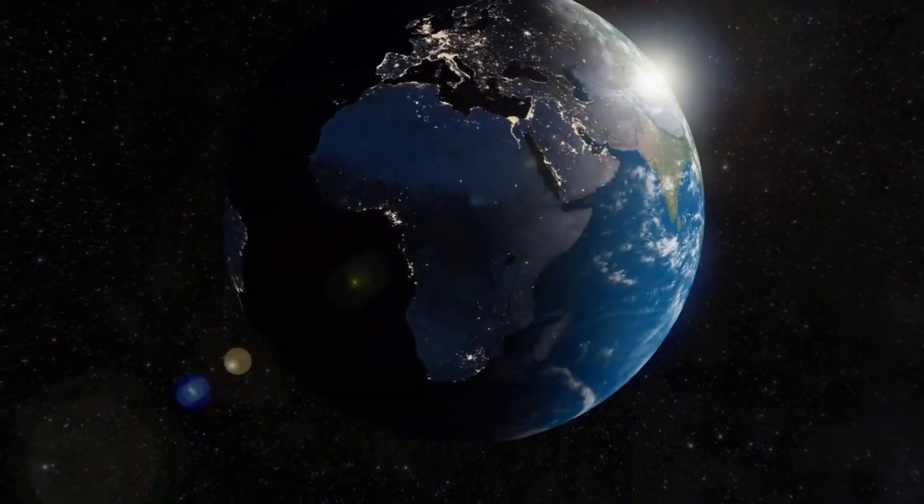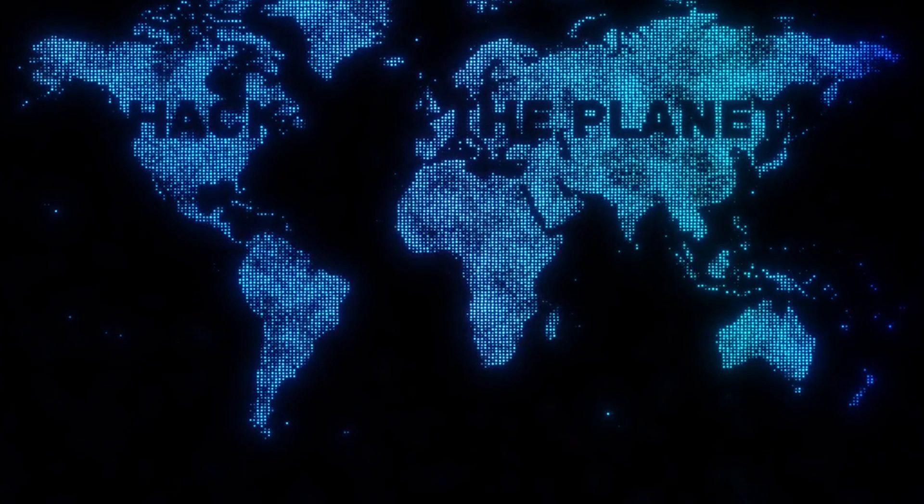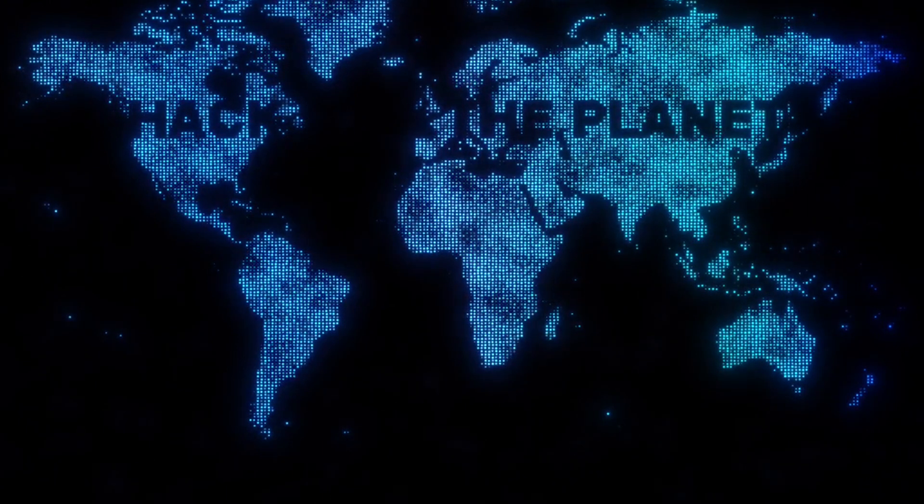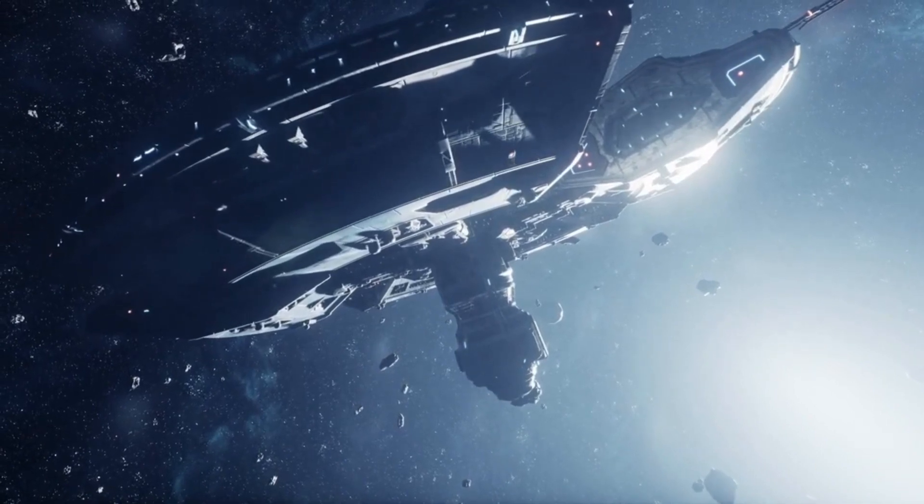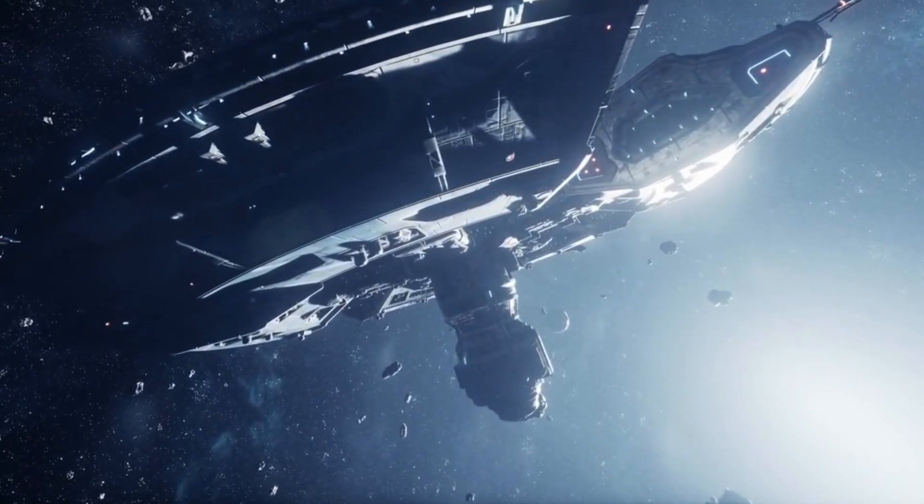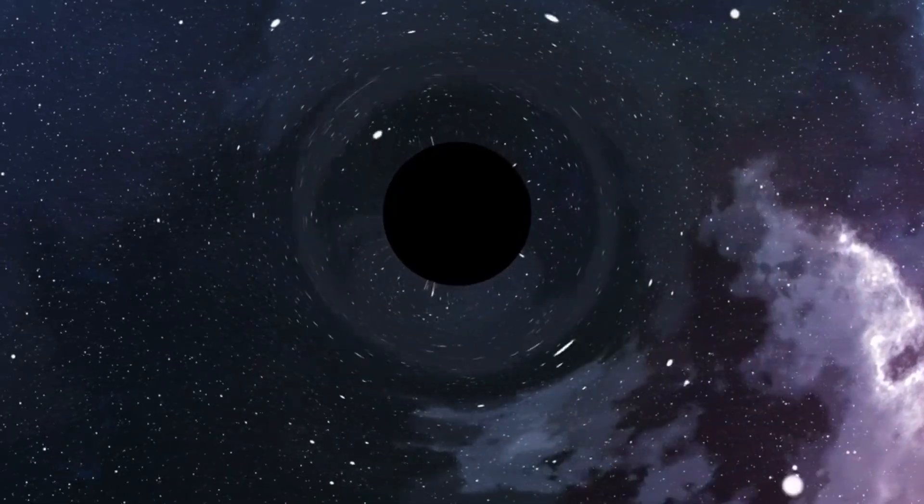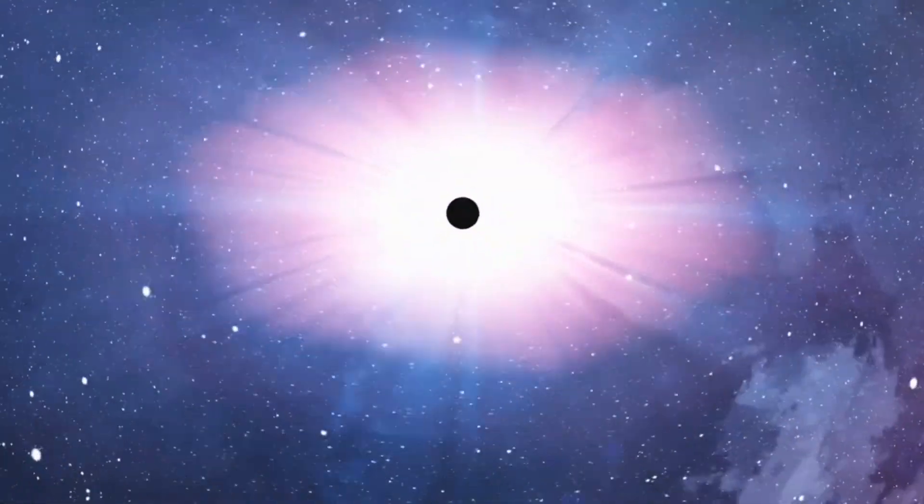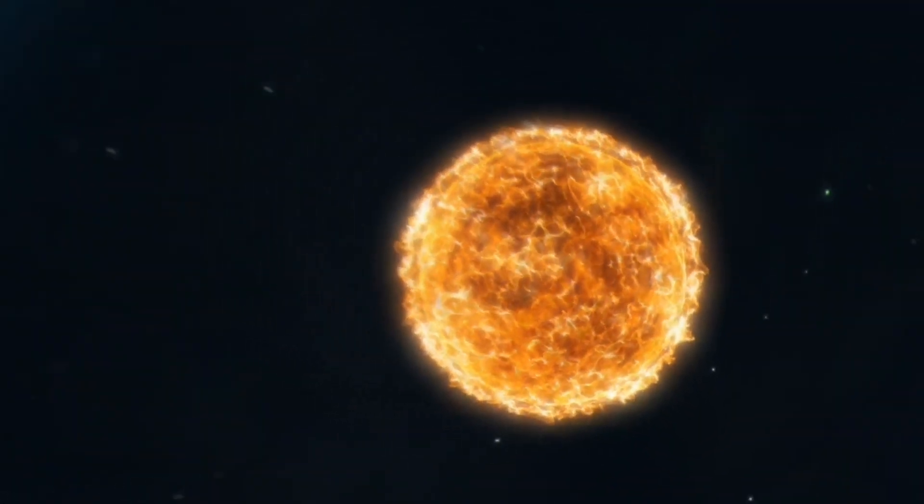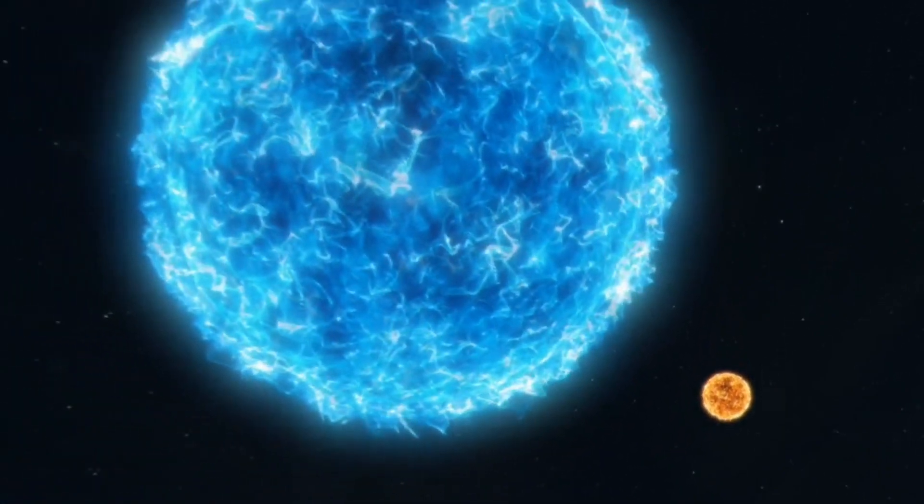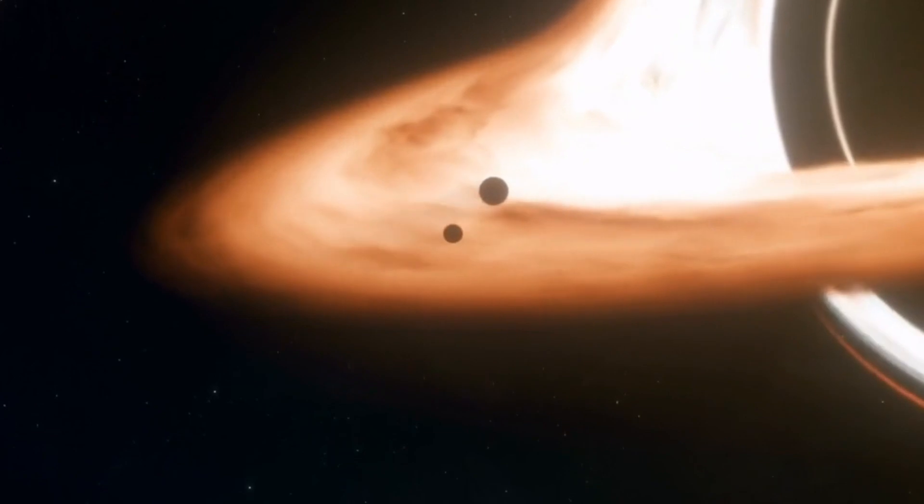So while we don't know for sure where it is, we have decent proof to think it's there. You may think it's impossible to find such a distant object given the data we have, but we have already found a planet based on our predictions once: Neptune. Astronomers of the past believed something was tugging Uranus, but they couldn't find any reasonable explanation. Later, one scientist using classical celestial mechanics made a prediction on the location of a hypothetical planet that was supposed to be in charge of what was happening to Uranus. Using those calculations, astronomers were able to locate Neptune exactly where it was predicted to be in just one night.